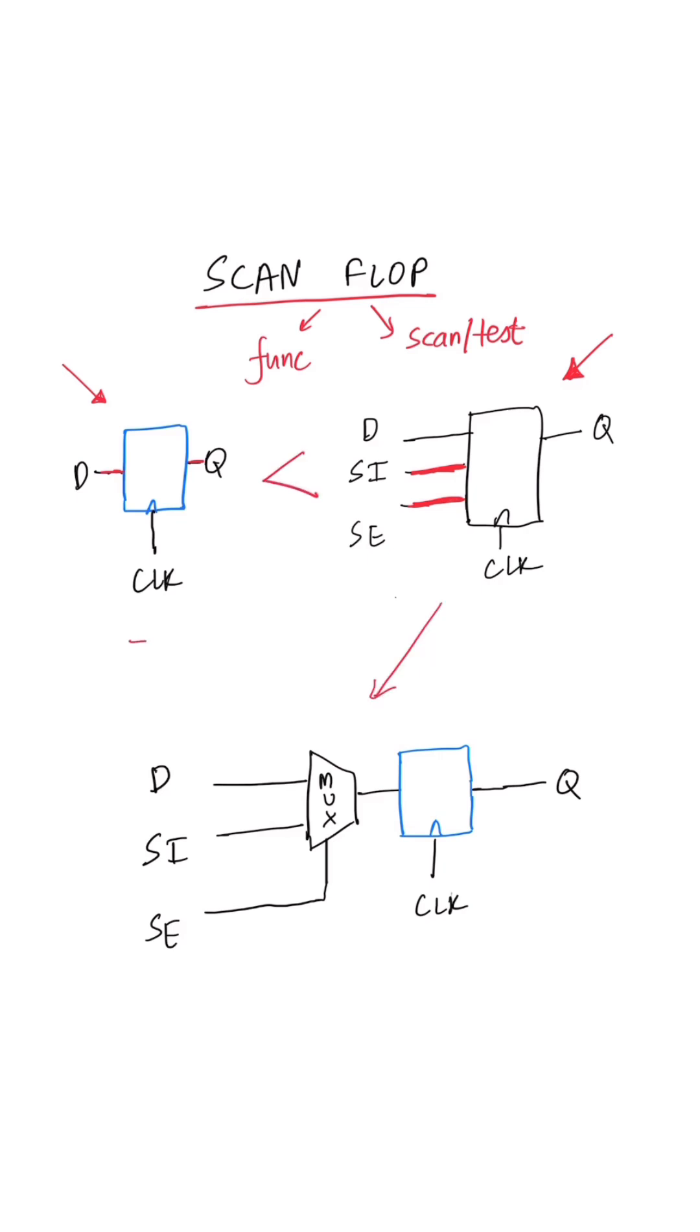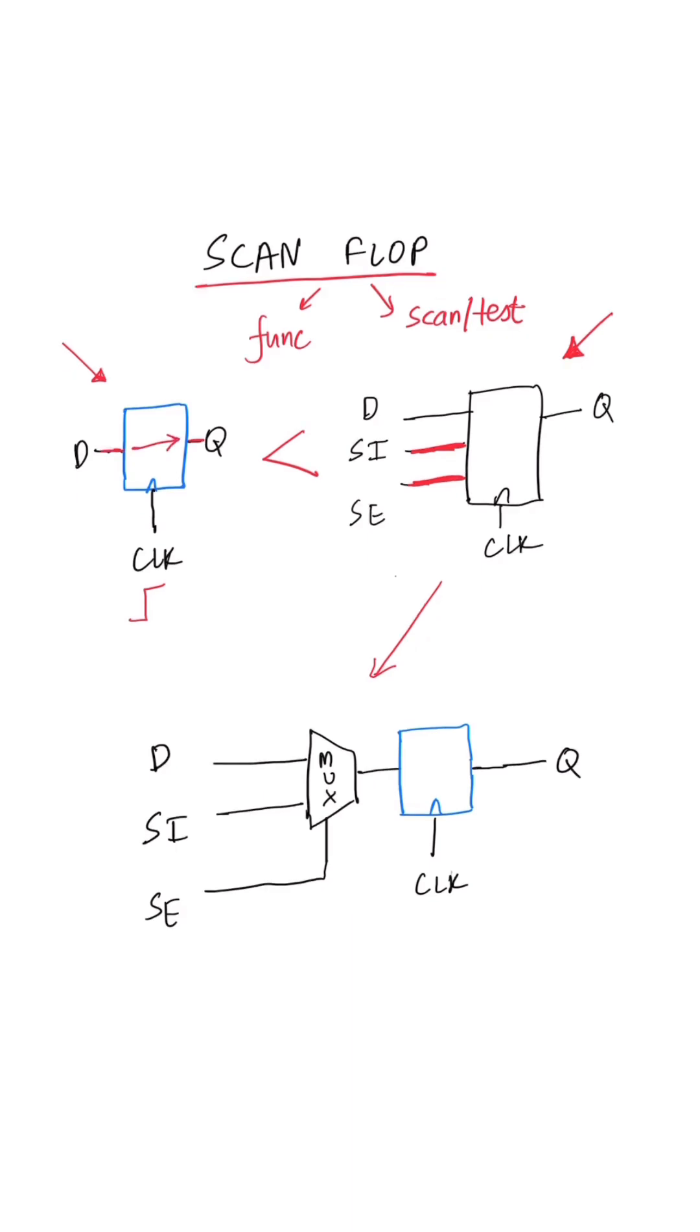In case of a regular flop, when the clock edge comes, D goes to Q. But in case of a scannable or testable design, we will have a scan enable signal. When this signal is 0, we operate in normal functional mode. When this signal is 1, we operate in scan mode.